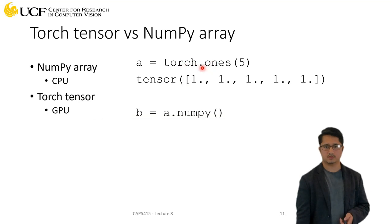So torch.ones(5) is the dimension, so that will give you a five-dimensional one-dimensional vector with five different values. It's ones, so all will be one.